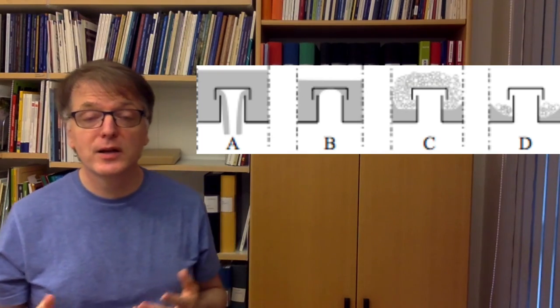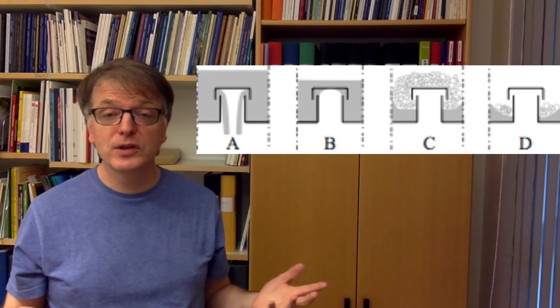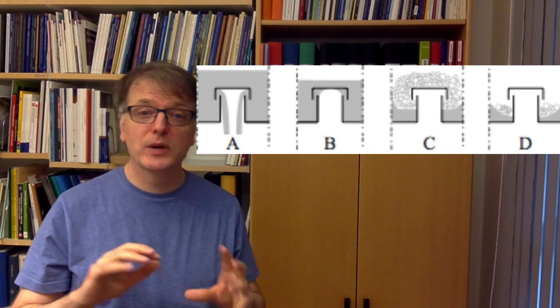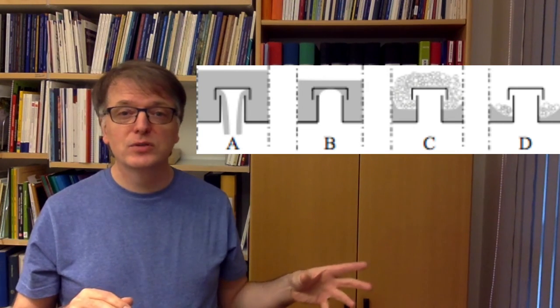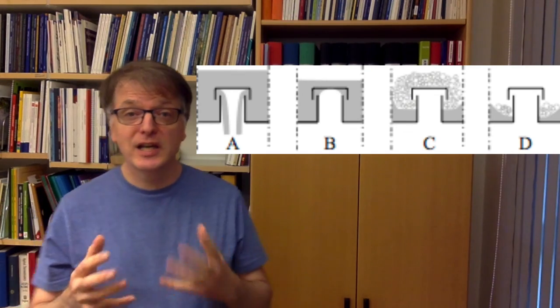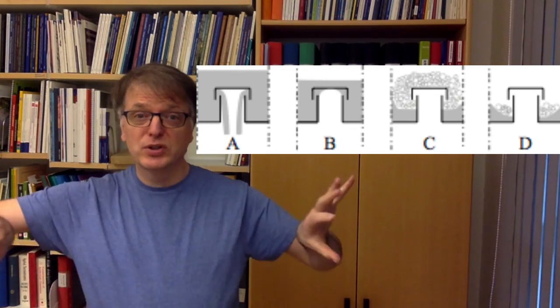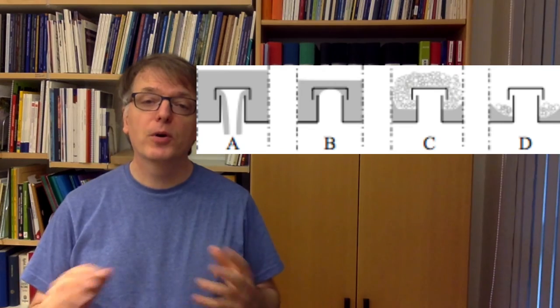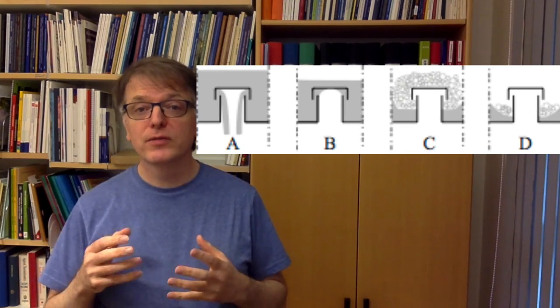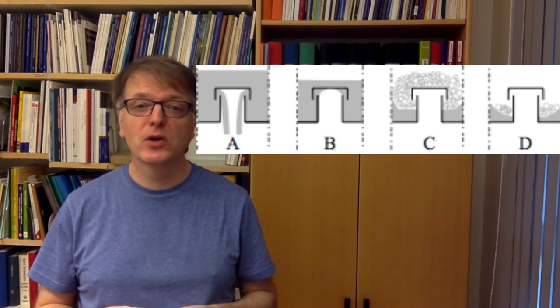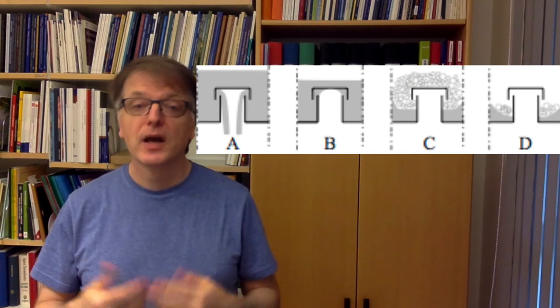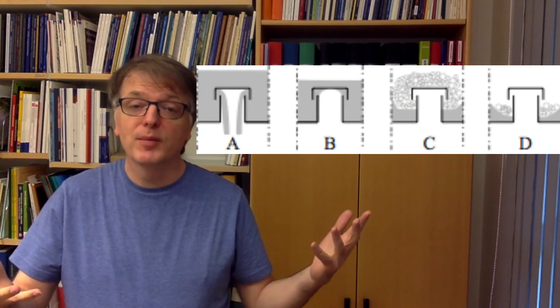But in D you have too much gas flow. So the gas flow is so large that it just pushes away the liquid from the bubble cap. So some of the gas can pass the bubble cap without ever coming in contact with the liquid and thus you can't get equilibrium right?